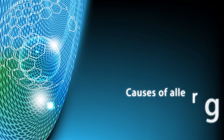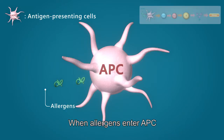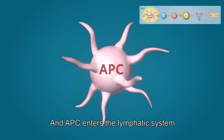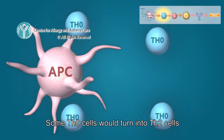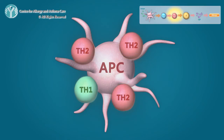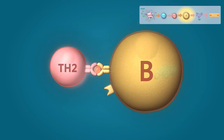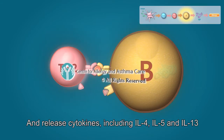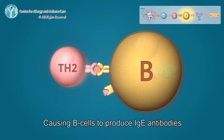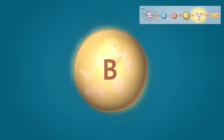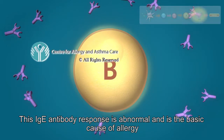Cause of allergy. In patients who have an allergic tendency, when allergens enter the APC, and the APC enters the lymphatic system and interact and activate Th0 cells, some Th0 cells would turn into Th2 cells. These Th2 cells would interact with B cells and release cytokines including interleukin-4, interleukin-5, and interleukin-13, causing B cells to produce IgE antibodies. This IgE antibody response is abnormal and is the basic cause of allergy.